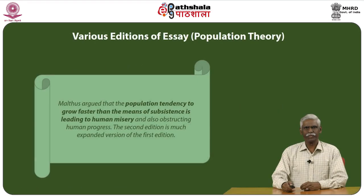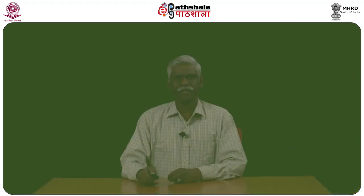The various editions of the essay on population by Malthus are important to present here. Malthus argued that the population's tendency to grow faster than the means of subsistence leads to human misery and obstructs human progress. The second edition is a much expanded version of the first; while the first edition contained his arguments against the opinions of Condorcet and Godwin, the second edition emphasizes arguments against the poor laws. According to Malthus, poor laws are meant for protecting the poor, but he thought they encouraged population growth.